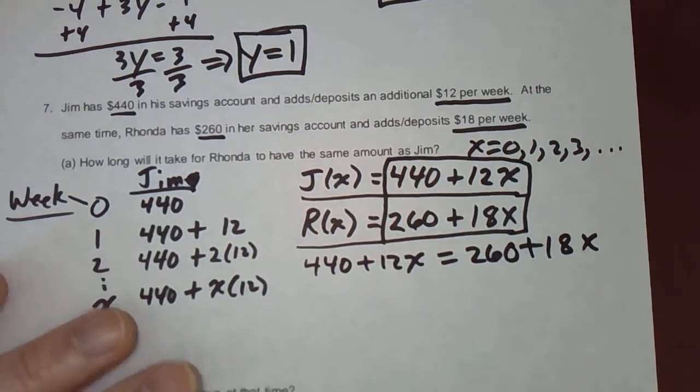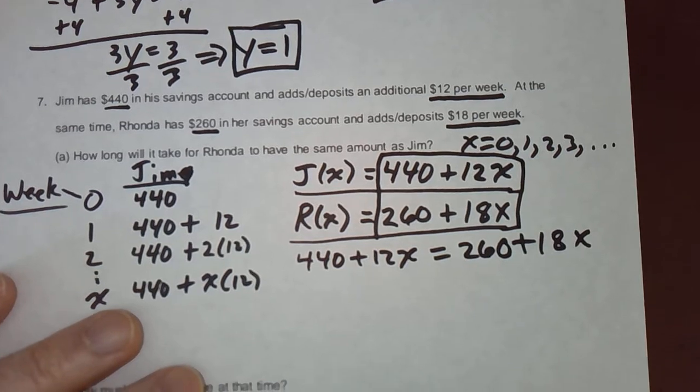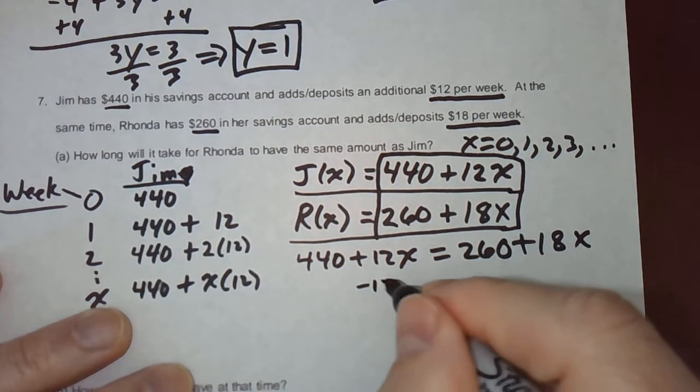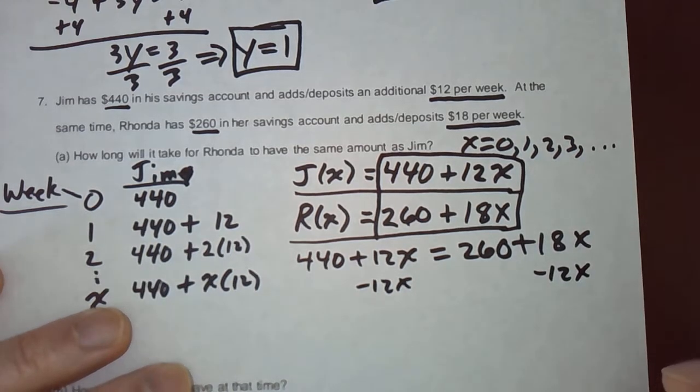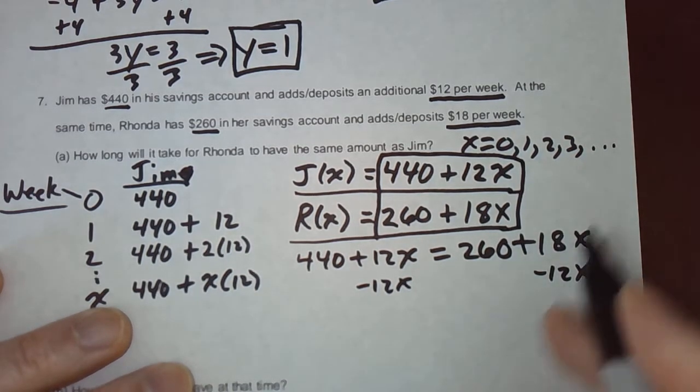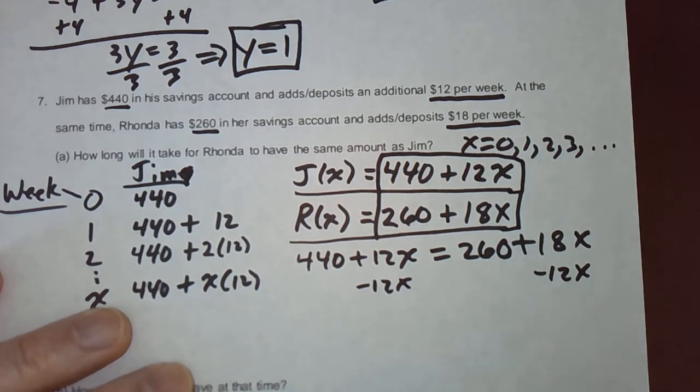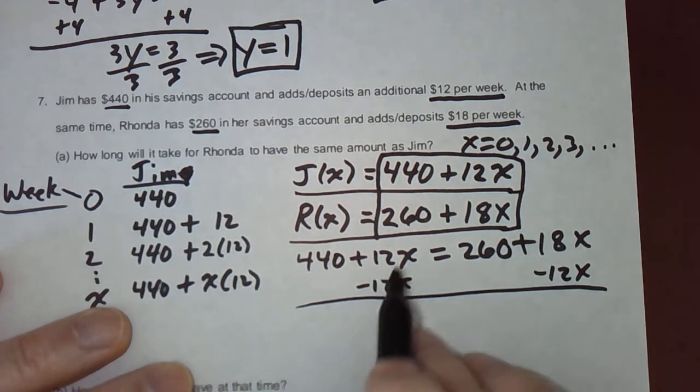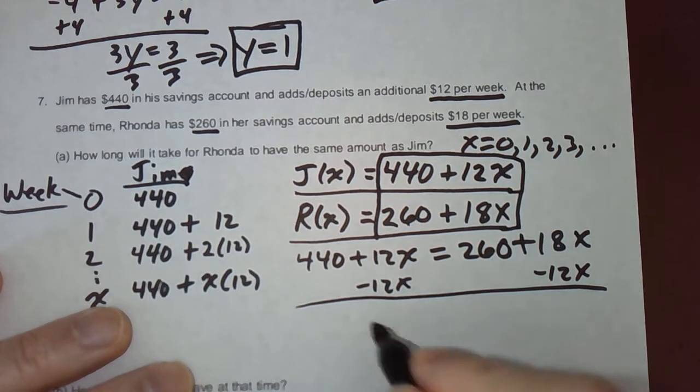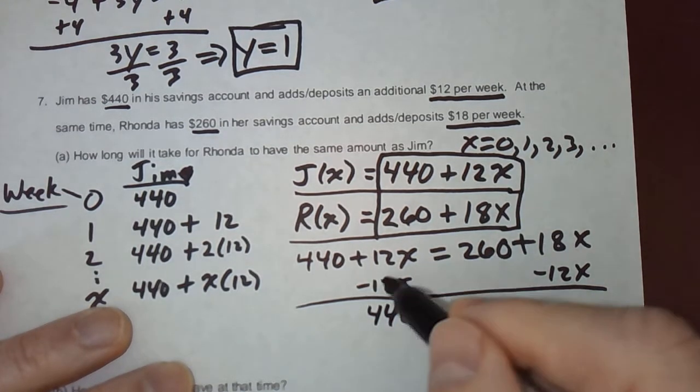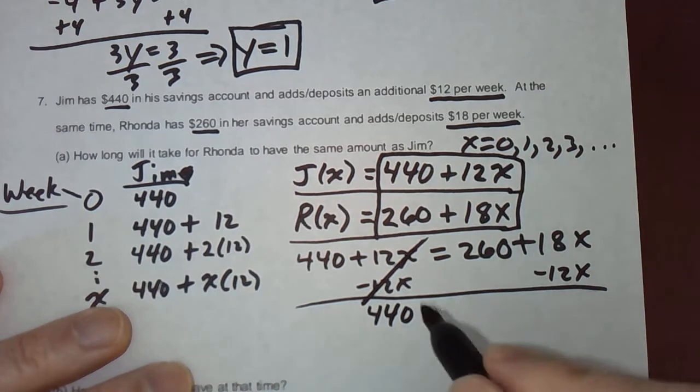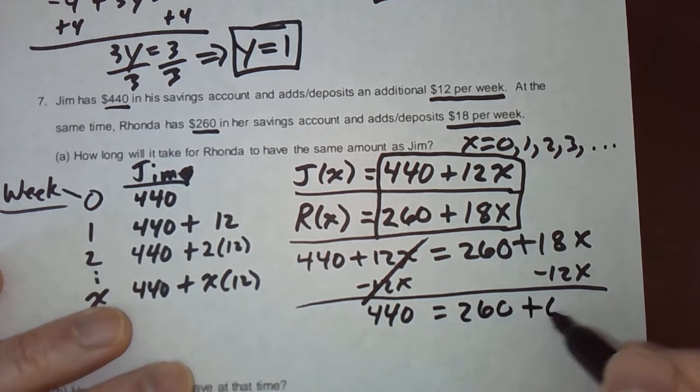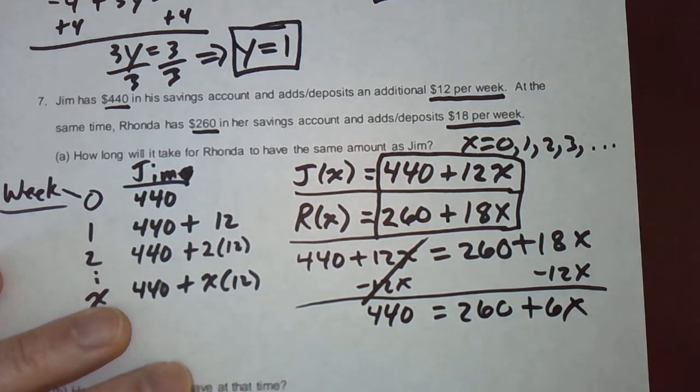Now, I'm going to do two things in one step to solve this. I'm going to subtract 12X from both sides. And I'm going to subtract 260 from both sides. Maybe I won't. I'll break it up into two steps. Let's just do this. We'll get rid of the X term on the left. So, 440, because that cancelled out, equals 260 plus 6X. 18X minus 12X.